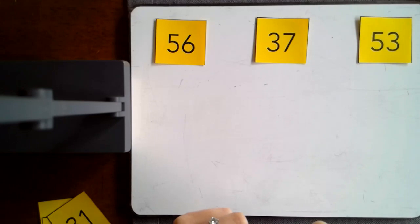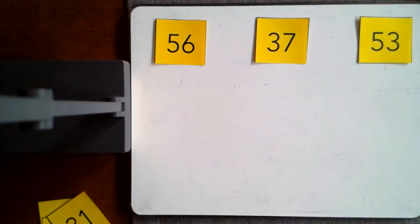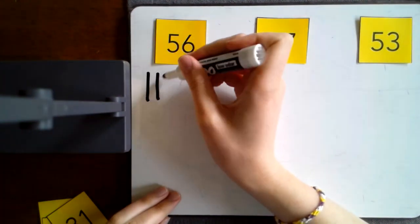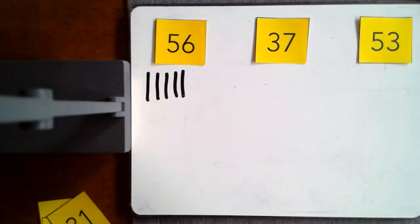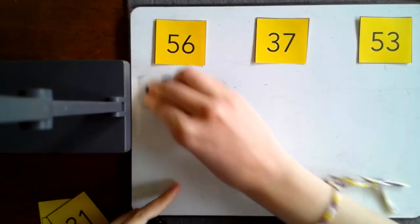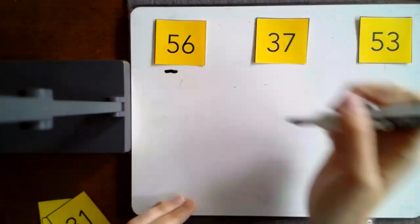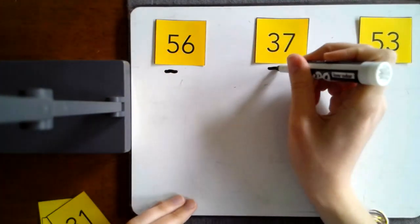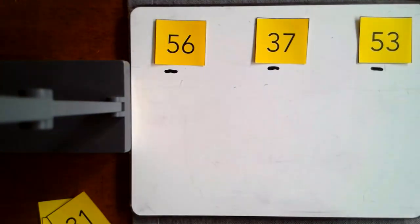When I look at these numbers, first graders, I can draw them out like I did before, 10, 20, 30, 40, 50. I could do that, but I also could choose to just look at the number in the tens place first. I'm going to underline that. So there's a five in the tens place, a three in the tens place, a five in the tens place.